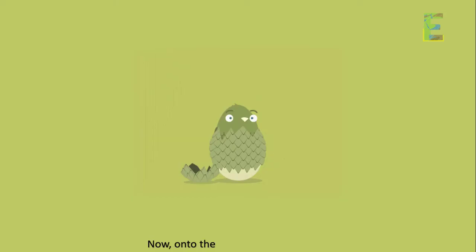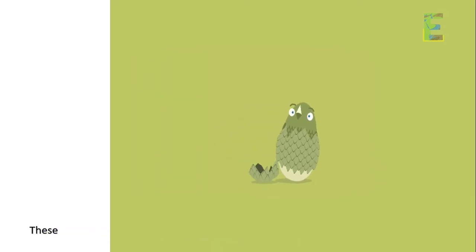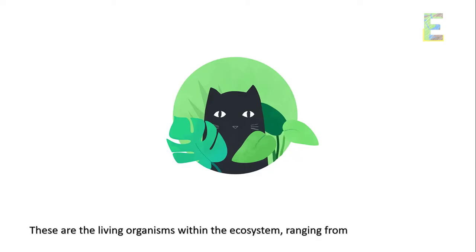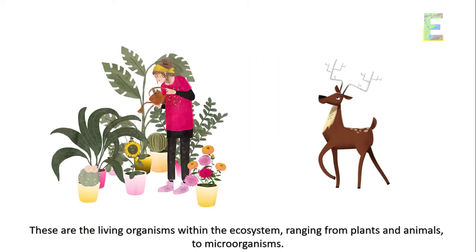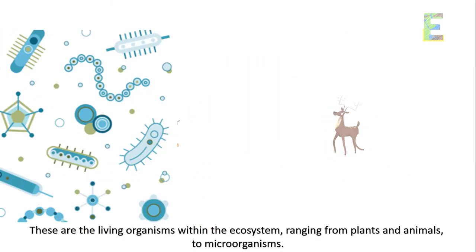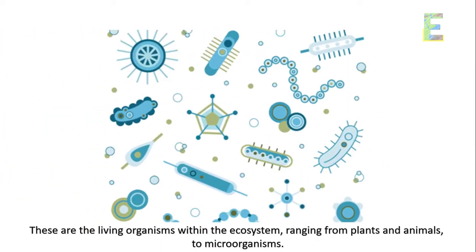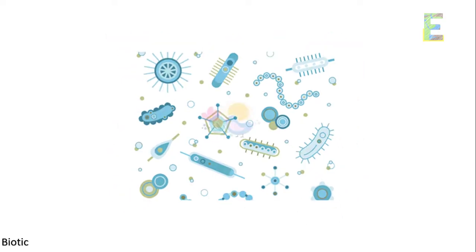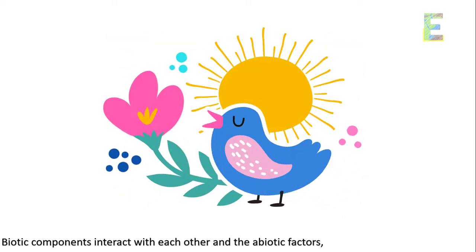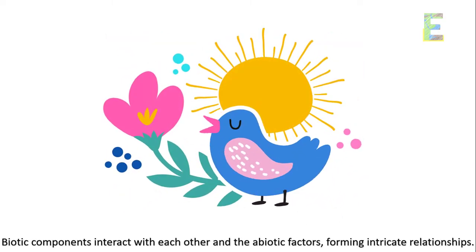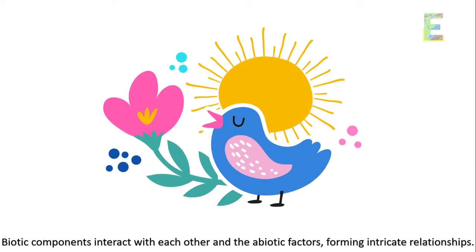Now, onto the biotic components. These are the living organisms within the ecosystem, ranging from plants and animals to microorganisms. Biotic components interact with each other and the abiotic factors, forming intricate relationships.